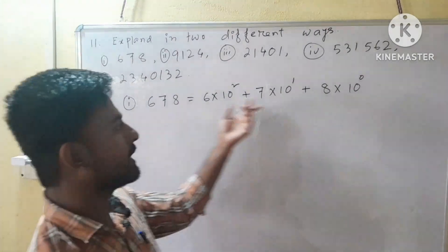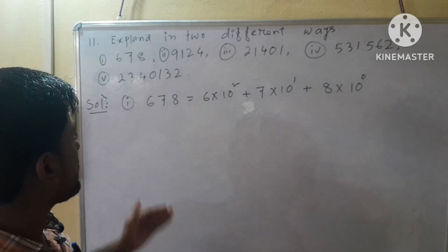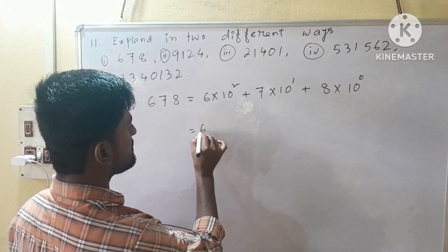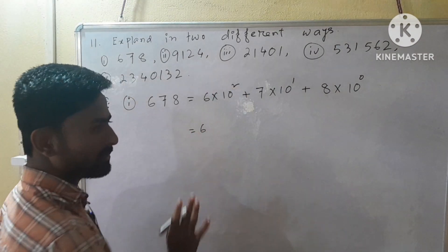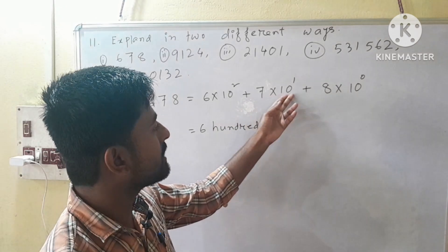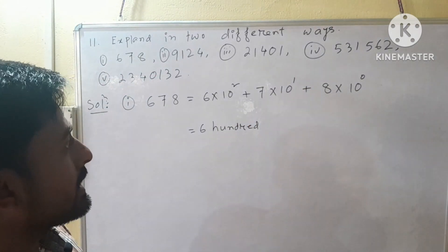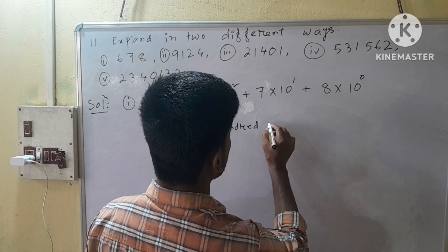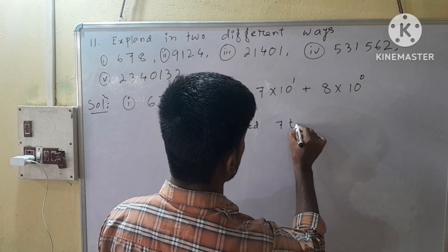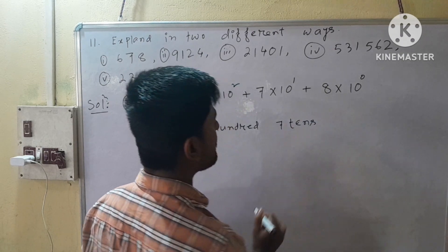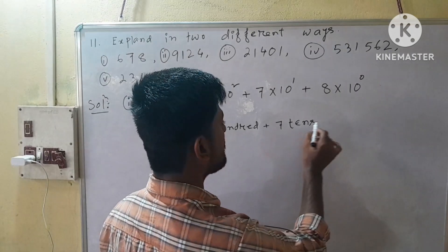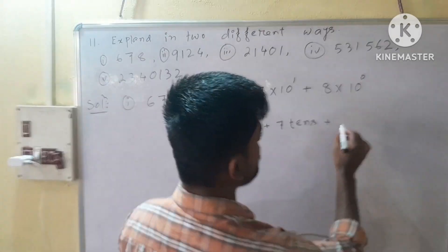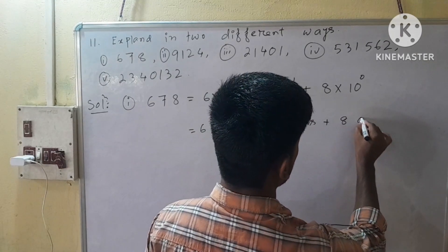That is one way. Now we expand this number in another different way: 6 into 10 squared means 100, so 600; plus 7 into 10 to the power 1 means 7 tens; plus 8 into 10 to the power 0, which means 1, so 8 ones.